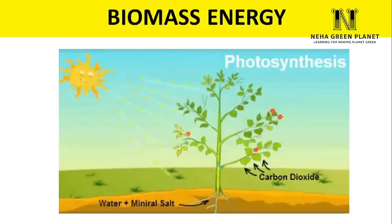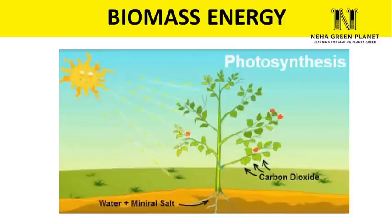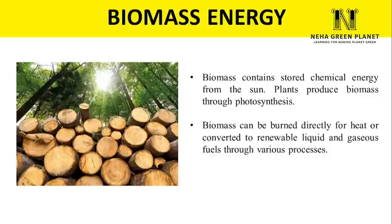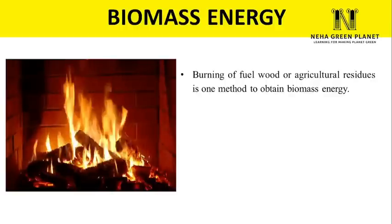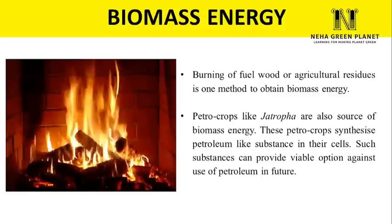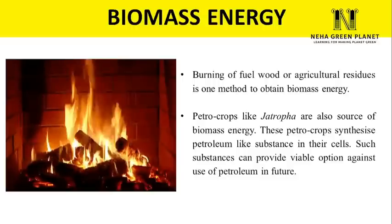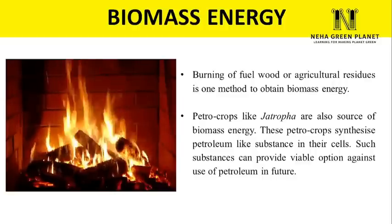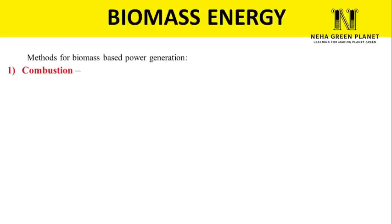Biomass energy is derived from the biomass or dry matter of plants. Plants store chemical energy from the sun through photosynthesis. Biomass can be burnt directly for heat or converted into liquid or gaseous fuel. Burning fuel wood or agricultural residue is one way to obtain biomass energy. There are also petrocrops like jatropha, which contain petroleum-like substances in their cells and could be viable alternatives to petroleum in the future.